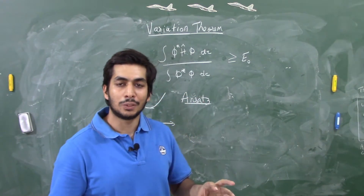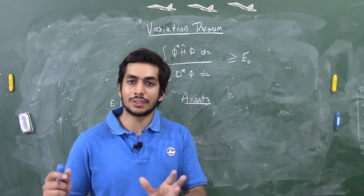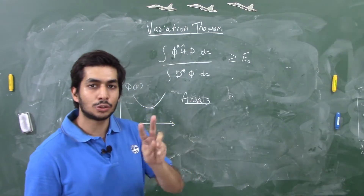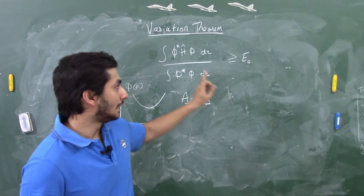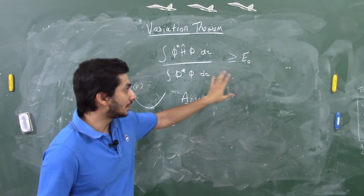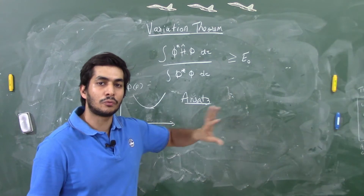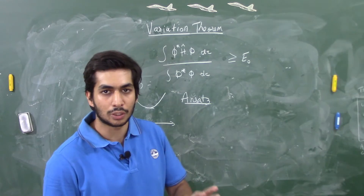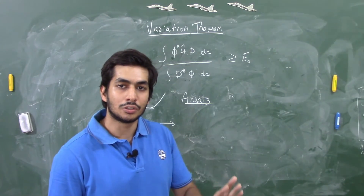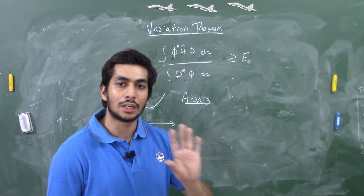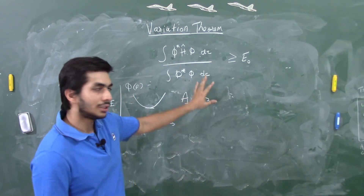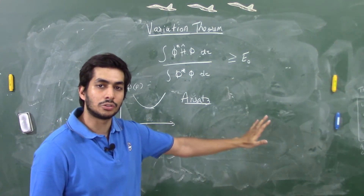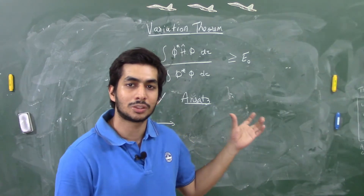Whatever trial wave function you take must obey the boundary conditions and be a well-behaved quantum mechanical wave function. Provided these two conditions are met, the energy you calculate will never be less than the original energy of the system. For a particle in the ground state of a 1D box, the original energy is h²/8mL². Whatever energy you calculate using any trial wave function will always be greater than or equal to that.